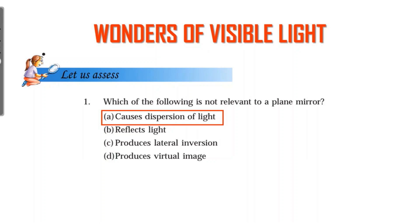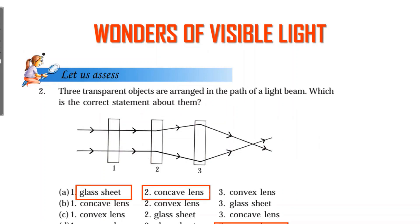A plane mirror produces lateral inversion and produces a virtual image. Next question: a transparent object is arranged in the path of a light beam — which statement is correct? It doesn't change the direction — it causes a deviation. It's a glass sheet. A concave lens causes the light to diverge.